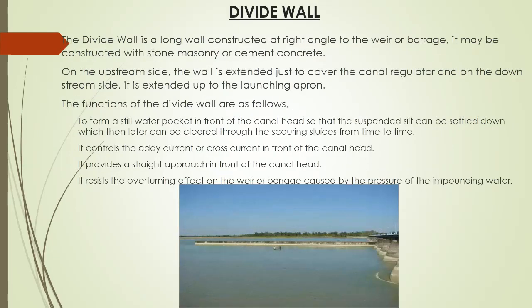The divide wall is a long wall constructed at right angles to the weir or barrage. It may be constructed with stone masonry or cement concrete. On the upstream side, the wall is extended just to cover the canal regulator, and on the downstream side it is extended up to the launching apron. The functions of the divide wall are: to form a still water pocket in front of the canal head so that suspended silt can settle and later be cleared through the scouring sluices; to control eddy currents or cross currents in front of the canal head; to provide a straight approach in front of the canal head; and to resist the overturning effect on the weir or barrage caused by the pressure of the impounding water.